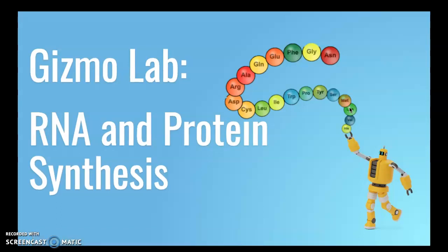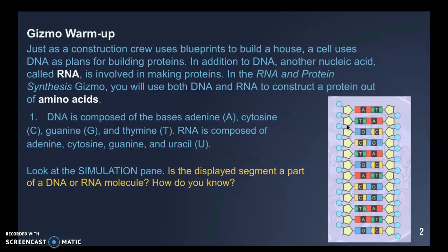Last night your homework assignment was to complete the Gizmo lab entitled RNA and Protein Synthesis to review the processes of transcription and translation. We wanted you to understand what that process looks like to build a protein. Just as a construction crew uses blueprints to build a house, a cell uses DNA as plans for building proteins. Another nucleic acid called RNA is also involved in making proteins.